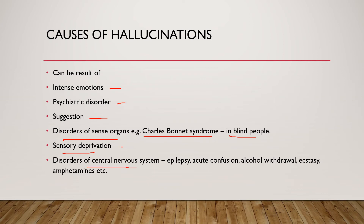Hallucinations can also happen in disorders of the central nervous system like epilepsy — sometimes people smell something like burning rubber or see flashing lights before an epileptic seizure. In acute confusion, delirium, or any kind of infection affecting brain function, the brain can produce hallucinations in the visual, auditory, or tactile modalities. Alcohol withdrawal is very well known — this is delirium tremens — where a person can start seeing and hearing things, notably that everything appears very small. It can also happen with illicit drugs like ecstasy, amphetamines, LSD, and a number of other hallucinogenic drugs.